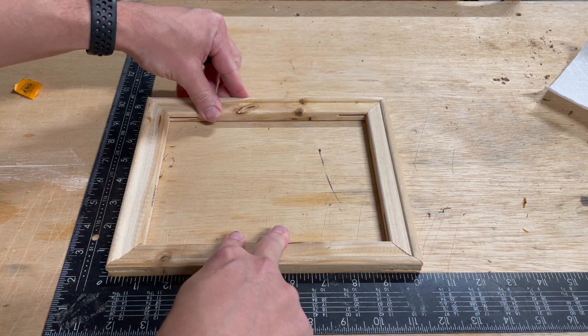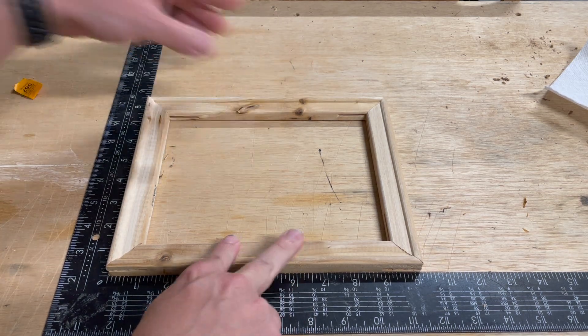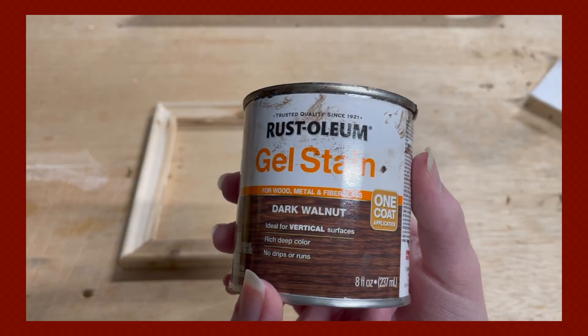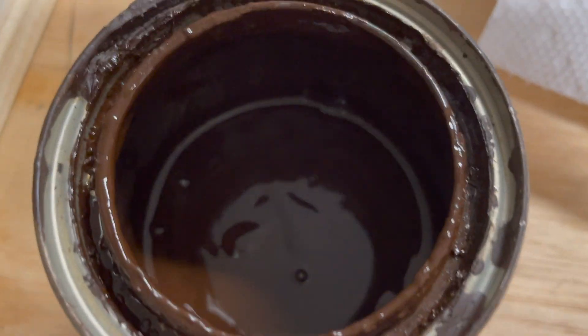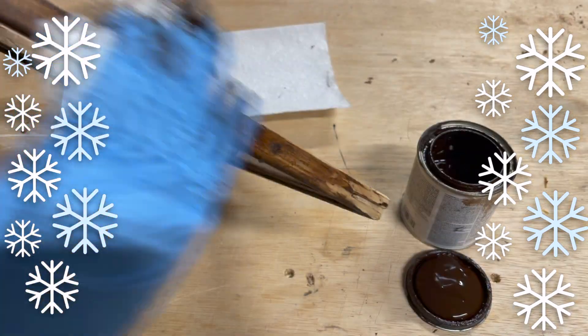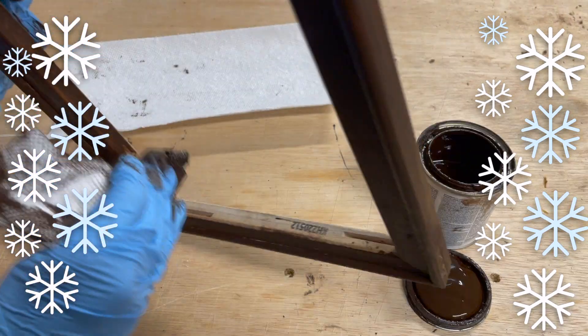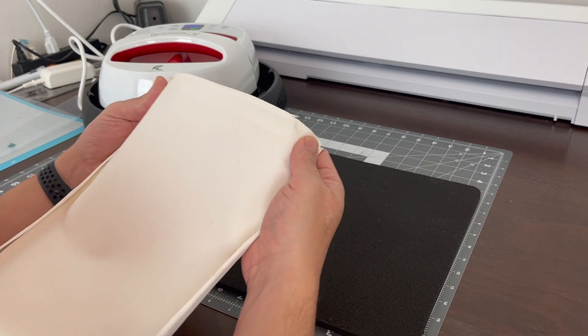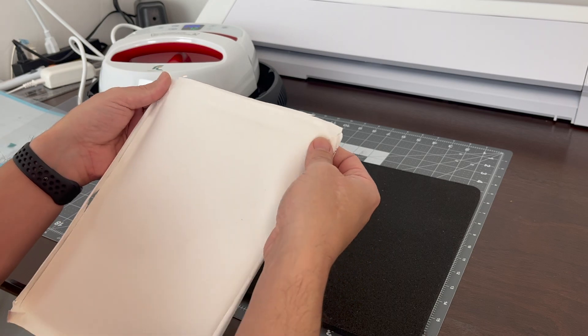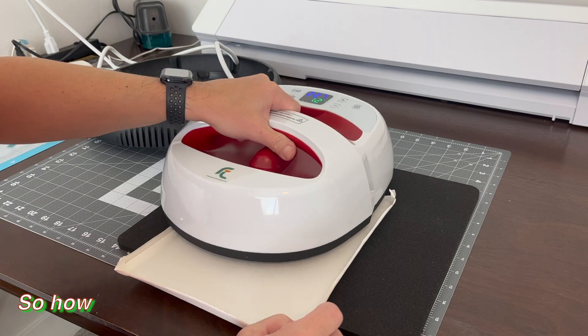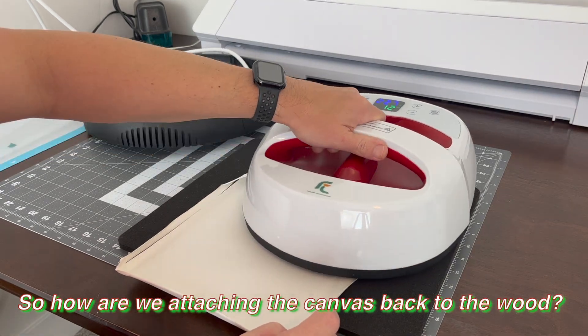Now we have to let that dry a bit, right? Yep, just want to make sure it's perfectly square. Now we're going to iron this out which should shrink the canvas a little bit and straighten this out for us, and then we can go ahead and put our design on it. So how are we attaching it back on? We're going to just staple it back on.